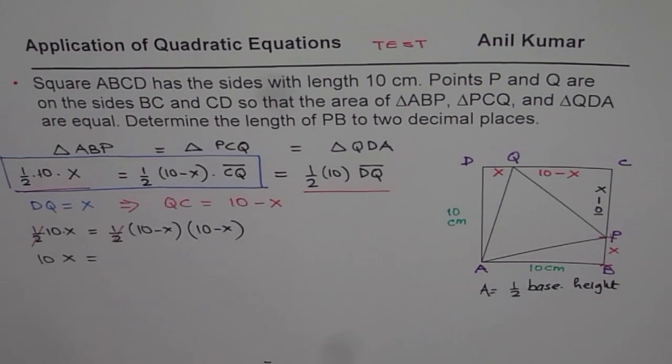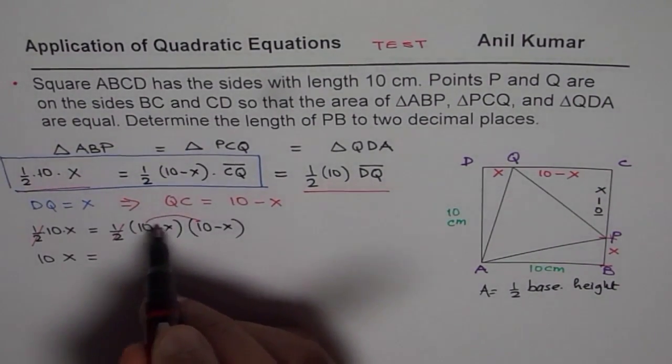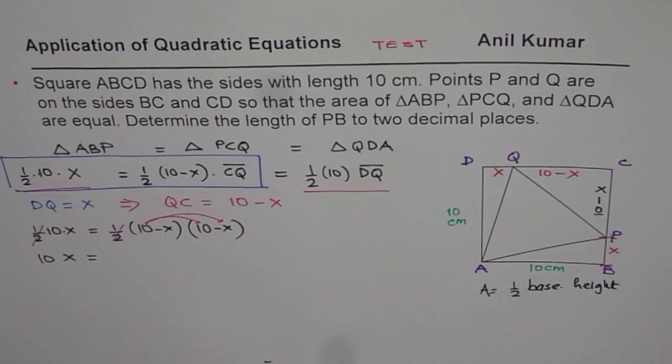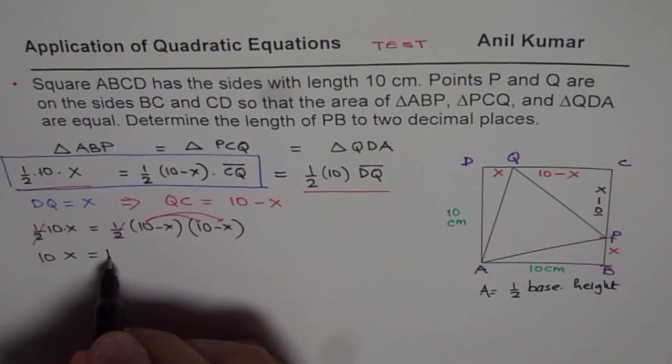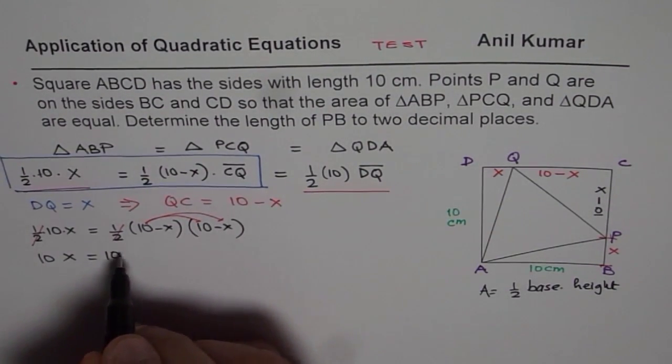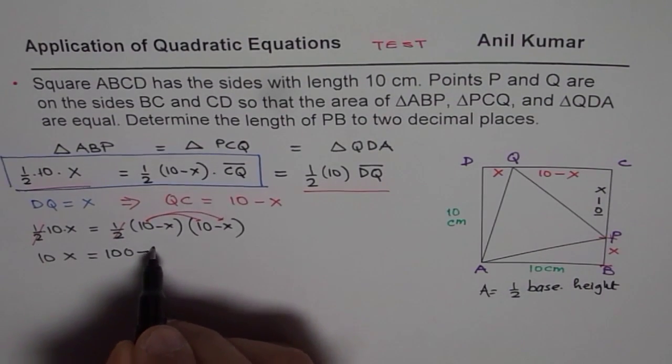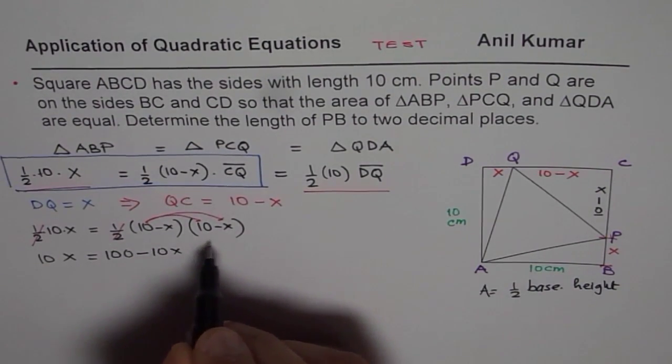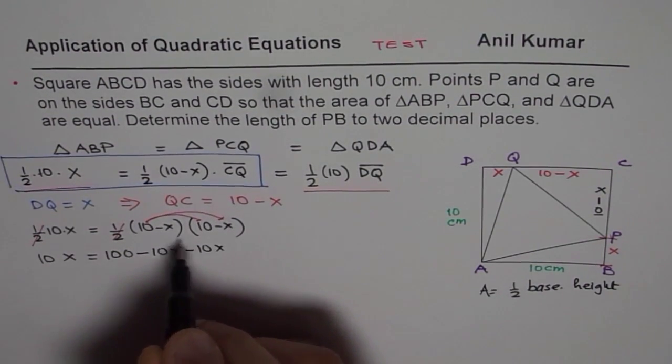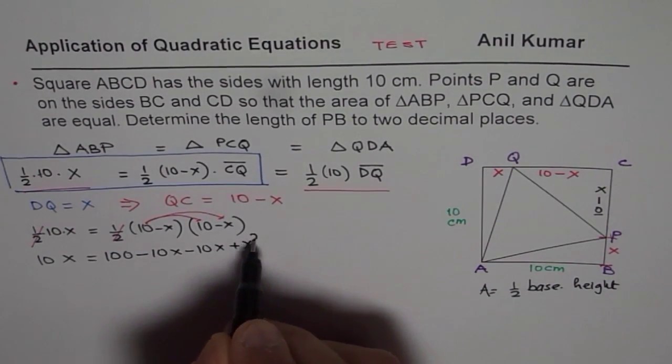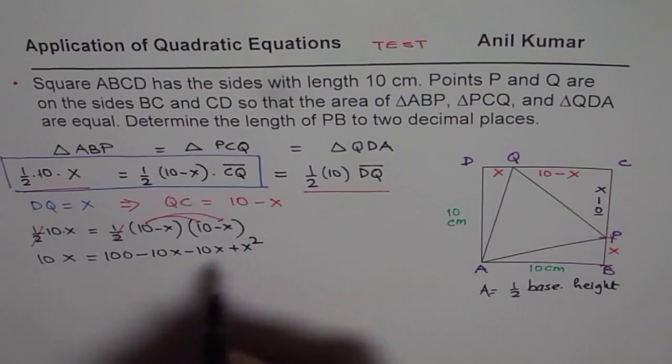When you multiply, let us apply the distributive property. So we will multiply both by 10 first. So we get 10 times 10 is 100 minus 10X and then with minus X minus 10X plus X squared.